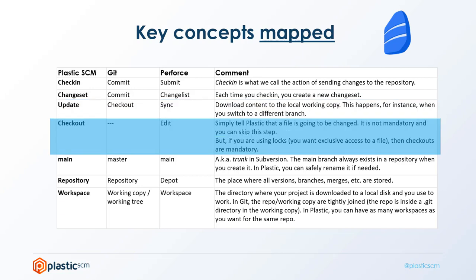Now we have checkout. We call checkout basically telling Plastic, "hey, I'm going to edit this file." This doesn't have an equivalence in Git, and it's a little confusing because what we call checkout is what Git calls update, and our checkout doesn't really have an equivalence in Git — it's just telling Plastic you're going to modify a file. It's not mandatory to work in this mode except if you're working with locks. If you want to lock files, then you need to check them out first.